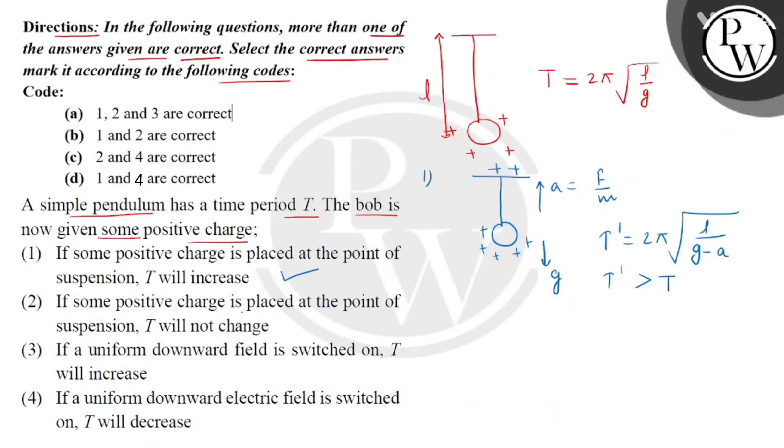Now statement 2 is that if some positive charge is placed at the point of suspension, T will not change. So we have already proved it. This will be incorrect because statement 1 is correct.